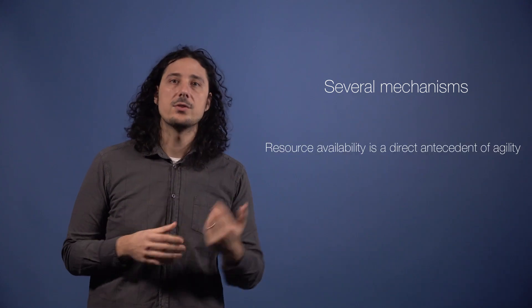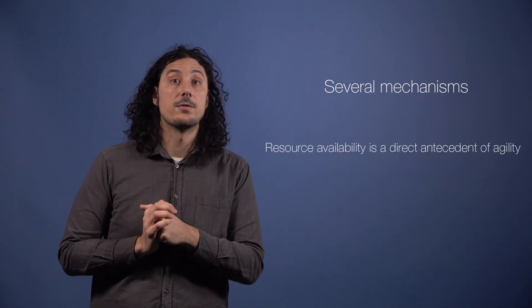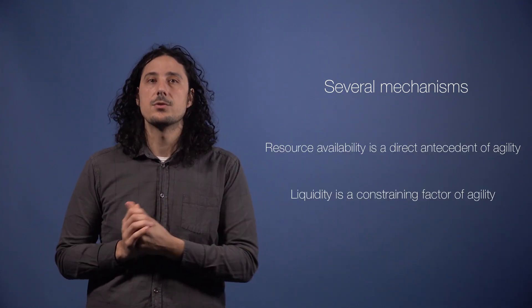In addition, our research also identifies several mechanisms behind agile inventory management. For example, resource availability is a direct antecedent of agility and liquidity is a constraining factor of agility.